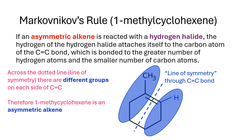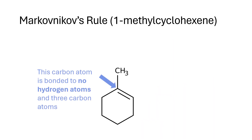Therefore 1-methylcyclohexene is asymmetric and Markovnikov's rule will apply to this compound. Thinking about the carbon atoms, the carbon atom on the left-hand side of the double bond is bonded to no hydrogen atoms and three carbon atoms.